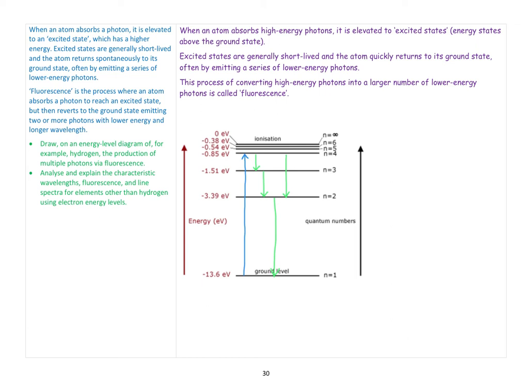Something that glows in the dark, or is luminescent, has a very long-lasting excited state. When you expose it to light, the atoms are put into a high excited state. Once you turn the light off, those atoms are still in an excited state, and over time they will slowly decay, releasing light — which is why we see something appearing to glow in the dark.